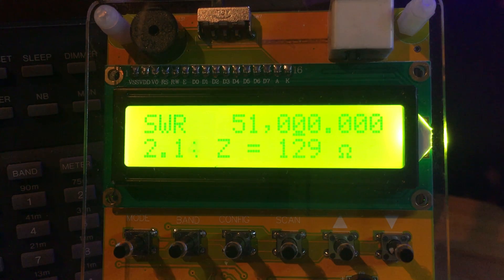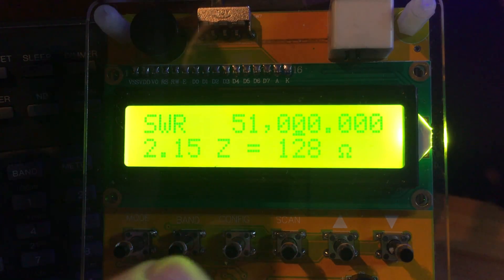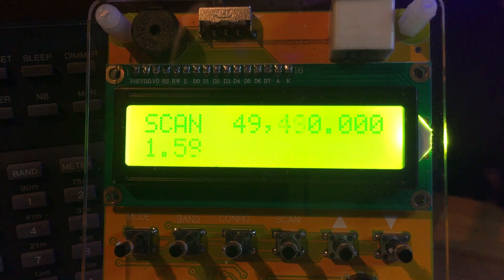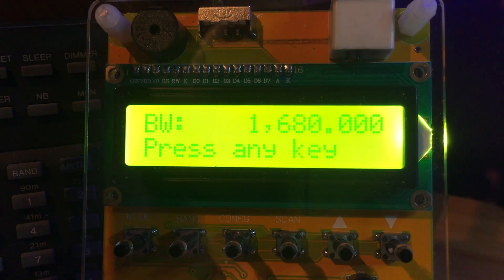So we're on the 6 meter band now. I'm going to do an analysis. I'm going to do a scan and see what we're looking at on this antenna. I think I'm going to have a shock, to be honest, but here we go. It starts at 49 megahertz. You can see it bleeps if it goes above 2. At one point there it did go above 2, so we've got a bandwidth of 1.68 megahertz for the six meter band.